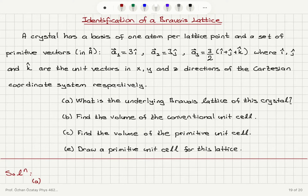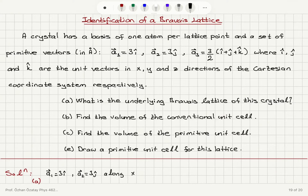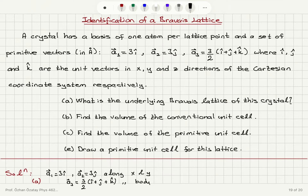To identify the Bravais lattice, I look at the basis vectors. a1 is 3i-hat and a2 is 3j-hat, so these are pointing along the x and y directions. Then a3 vector, the third basis vector, is (3/2)(i-hat + j-hat + k-hat), which is pointing along the body diagonal.